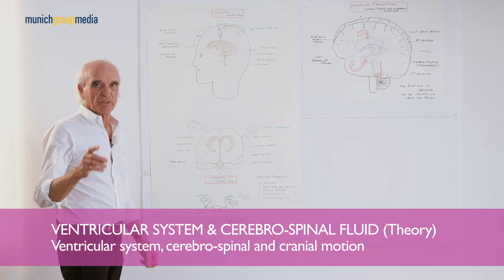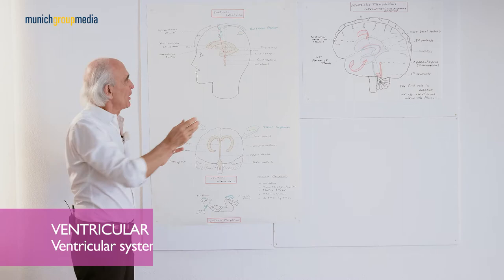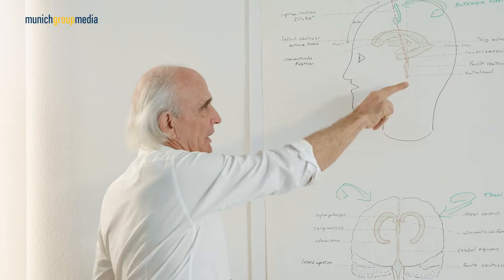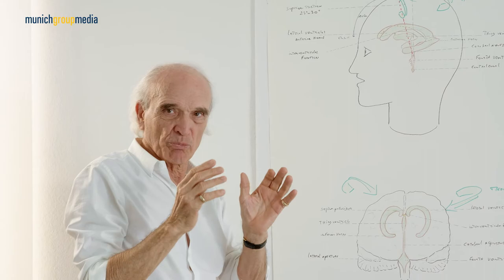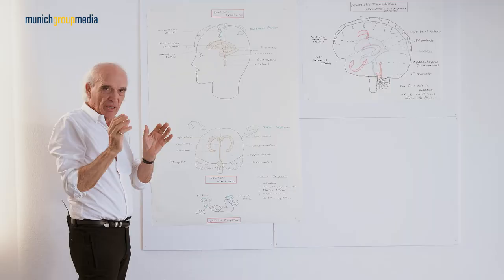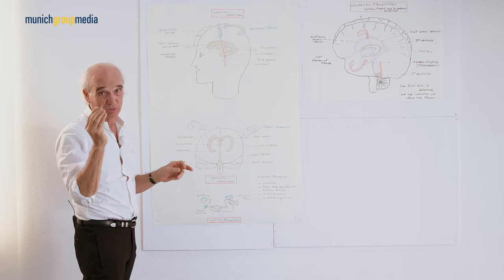Inside the ventricle you have billions of cilia which move about 10 times a second to make more of this liquid. And they are also responsible for the pressure of the ventricle. When there is a tumour inside the brain you can see the size of the lateral ventricles — they are not the same.